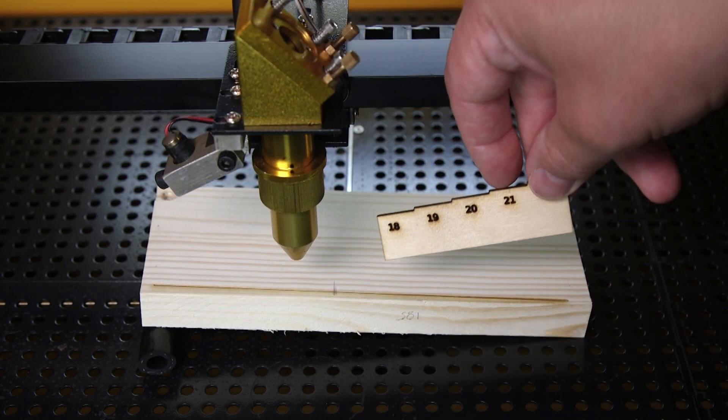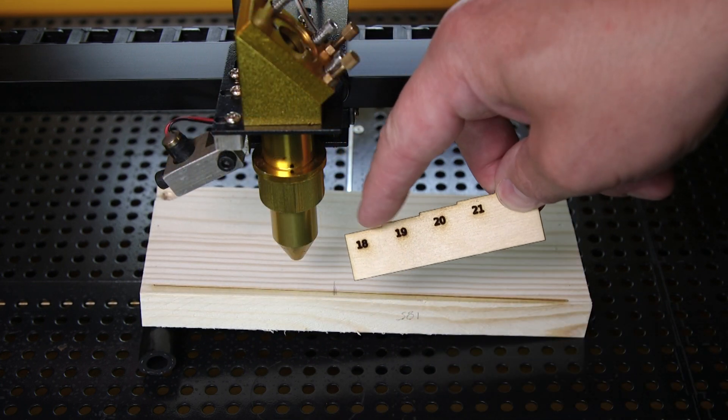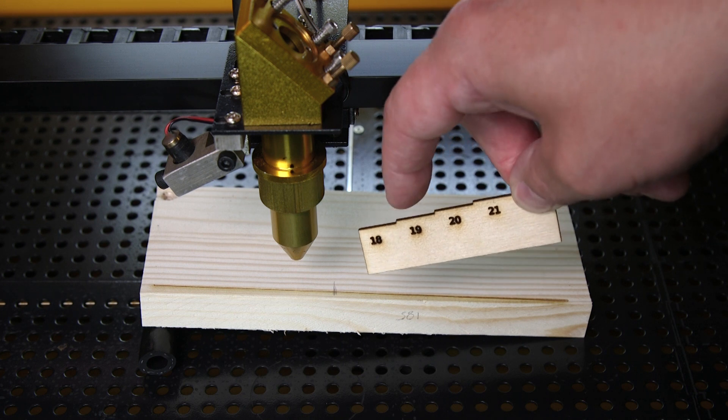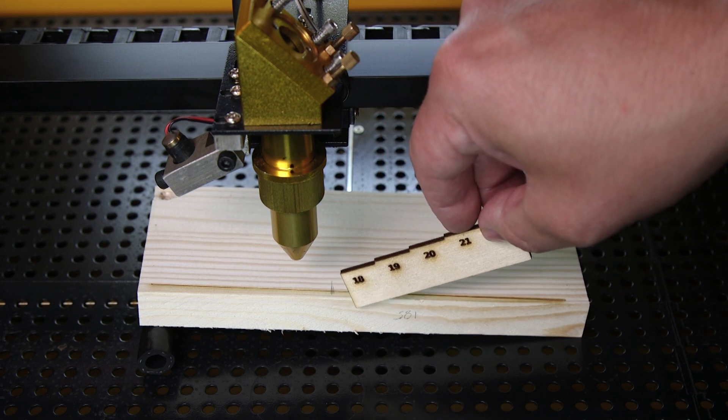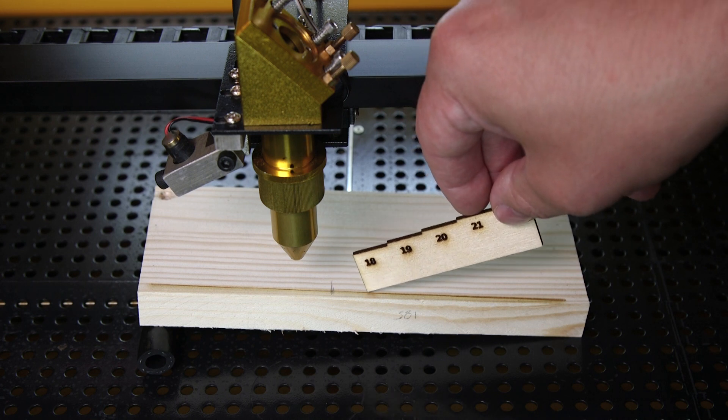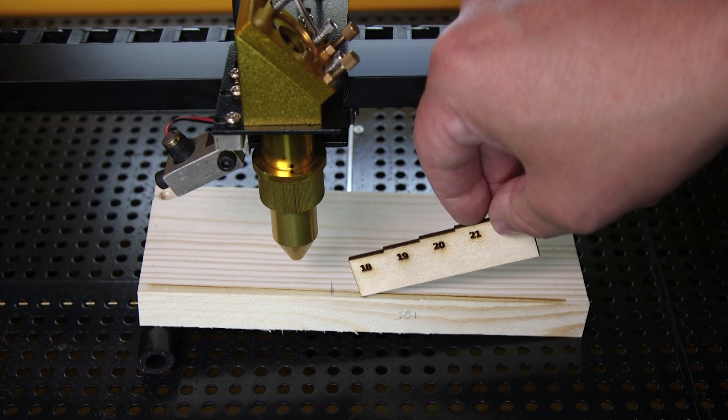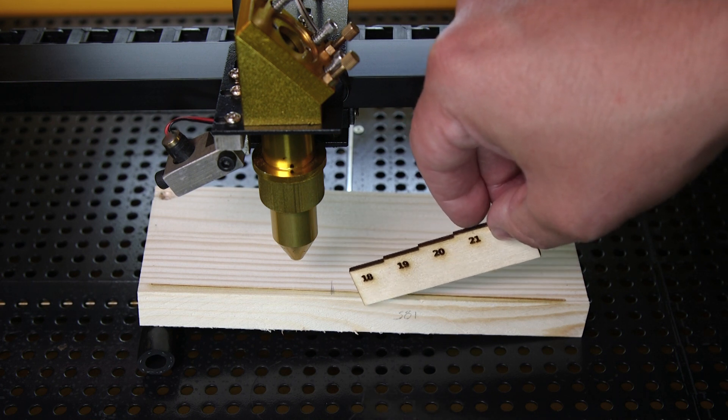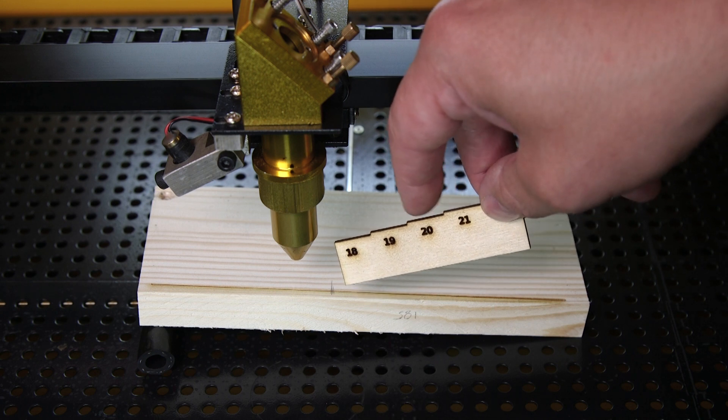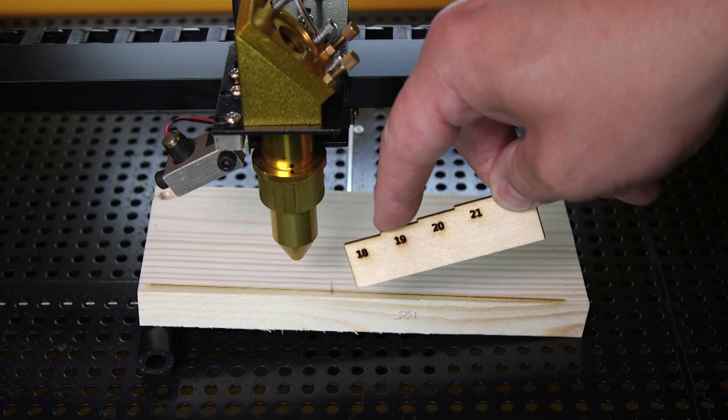So you'll see I have some other numbers on here—we got 18, 19, 21, and 22 millimeters here. That's because when you are cutting material, you actually want your focus point to be slightly below the surface of the material in order to get the best cut. So that's where the 18 and 19 millimeters come in handy.